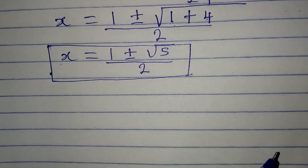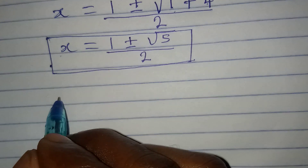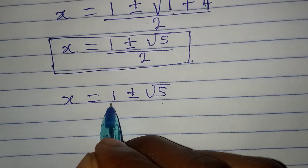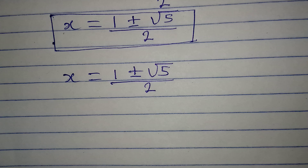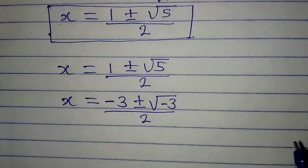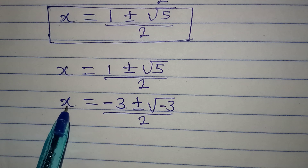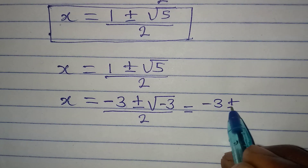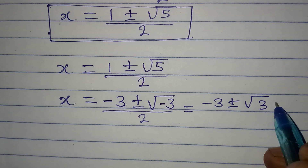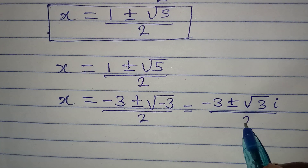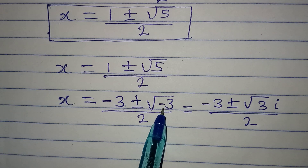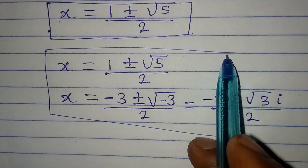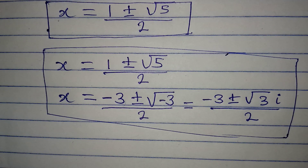Let me bring the two solutions together. We have x equals one plus or minus square root of five, over two. The other solution — from the y equals negative three case — can also be written as negative three plus or minus square root of three i, all over two. We have i because of the negative under the square root. So overall we have four solutions to the problem. Thank you for watching.